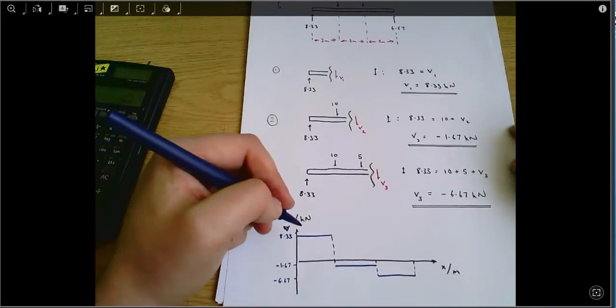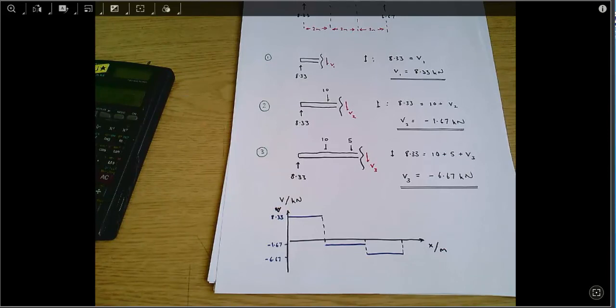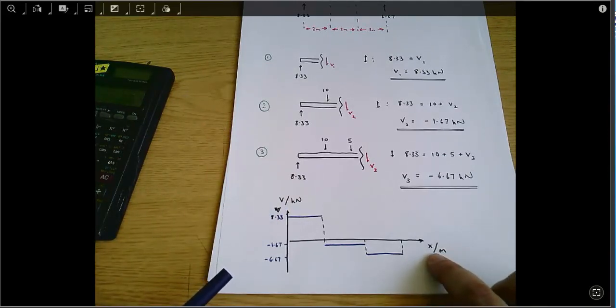And that's my final answer. That figure there is really what's asked for in the question. That's how the shear force in the beam, which I've called V throughout, varies as a function of position.